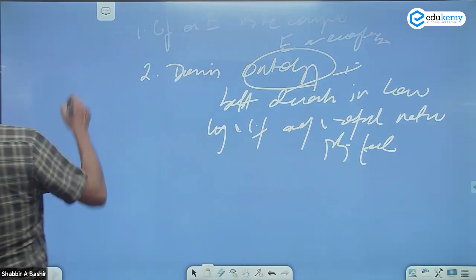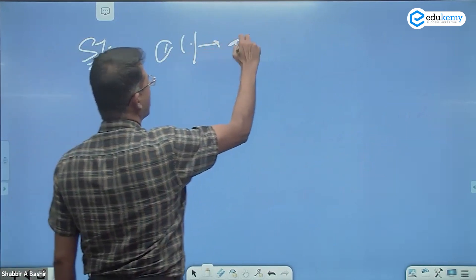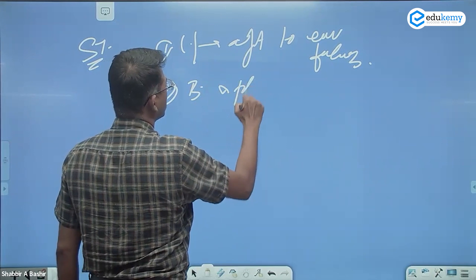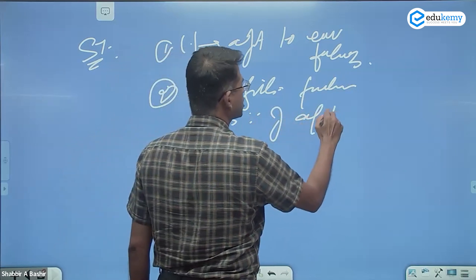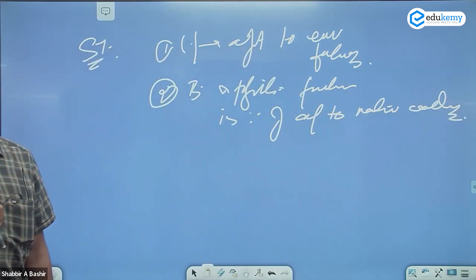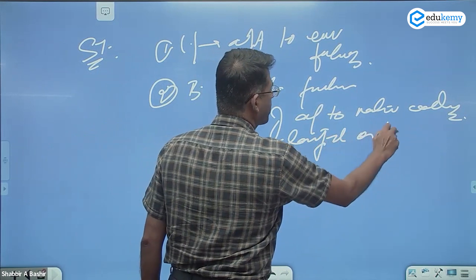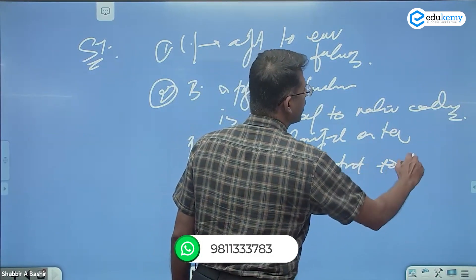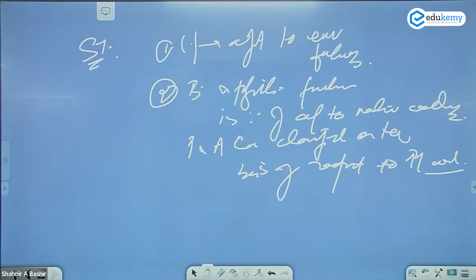The storyline is that life forms are adjusted to environmental factors — the biological and physiological functioning is because of adjustment to natural conditions. Plants and animals can be classified on the basis of their response to physical conditions. This forms your introduction.